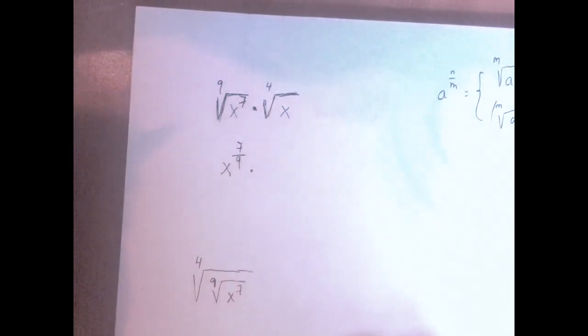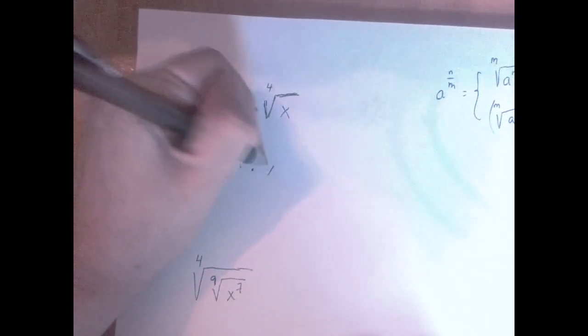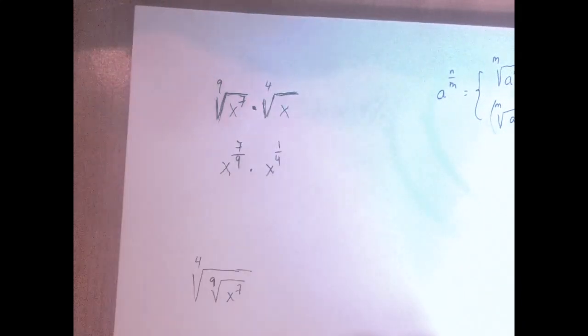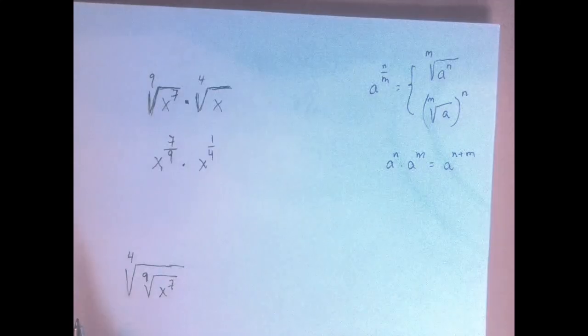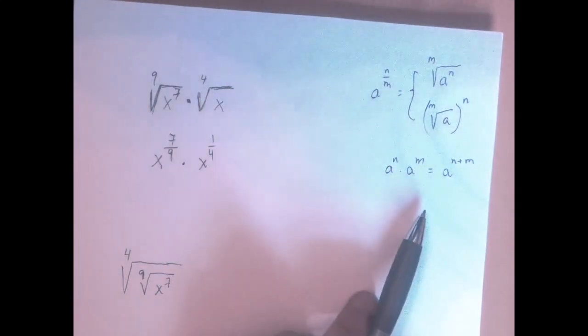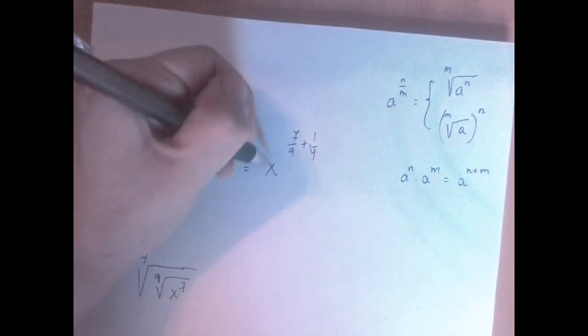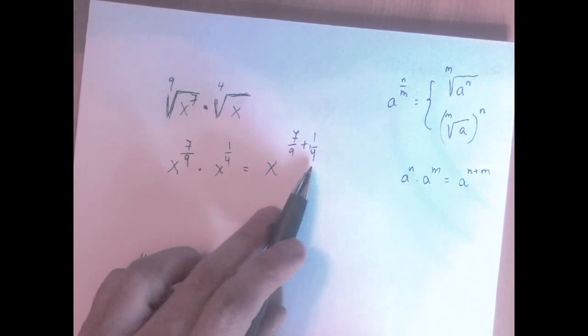And that is being multiplied by x to the 1/4th, right? That no exponent is an invisible exponent of 1. After this translation, we are going to use this basic rule of exponentiation to get x to the power of 7 over 9 plus 1 over 4.